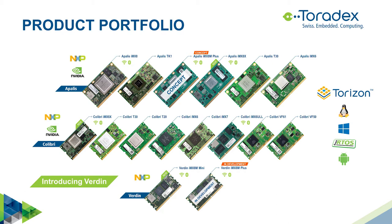In the middle, we have our cost and power efficient Colibri family. At the top, we have the higher end Apalis family. And more recently, at the bottom, you can see our new Verdin family, which will make an appearance later in the webinar. You can also see the production quality software provided with these modules out of the box.